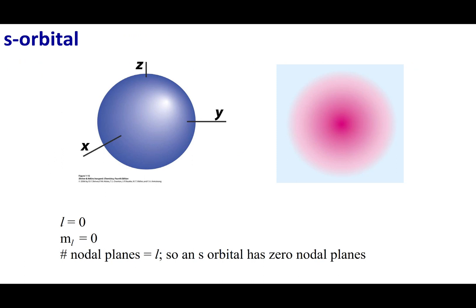L tells you the shape of the orbital. For example, if L equals 0, that is an S orbital. The shape of an S orbital is a perfect sphere — the probable location of the electron is perfectly symmetrical around the nucleus. If L is 0, the only possible value of M sub L is 0, so M sub L doesn't tell you much for an S orbital.